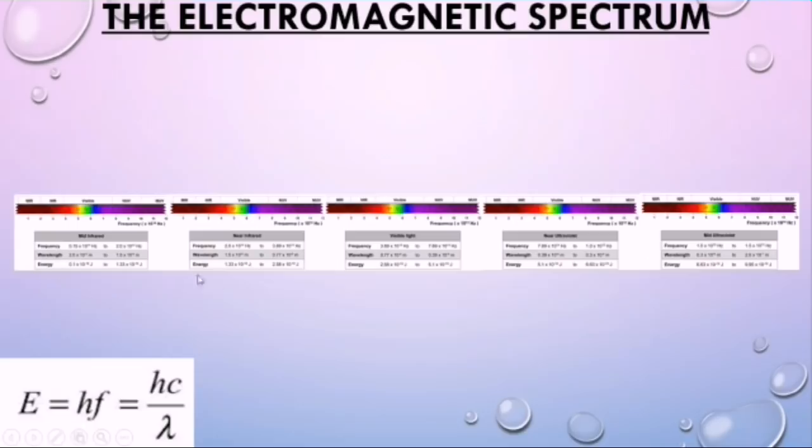Hence, the corresponding value of energy goes on increasing as well. And this energy of the photon is equal to HF as F is a property of wave.